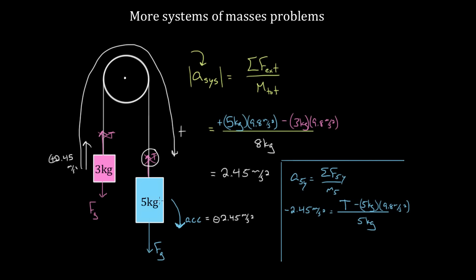Solving for tension gives 36.75 Newtons, which is less than the force of gravity on the five kilogram mass — and it has to be. If the tension were greater than gravity, the five kilogram mass would accelerate upward, which we know doesn't happen. The tension must be less than gravity so that the five kilogram mass can accelerate downward.